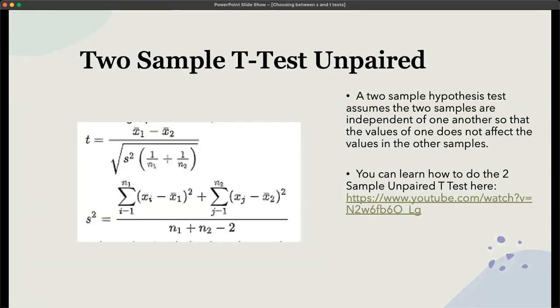A two sample t-test unpaired. So this would be an independent samples t-test. And this assumes the two samples are independent of one another so that the values of one does not affect the values of the other. So again, a two sample t-test unpaired is an independent samples t-test.